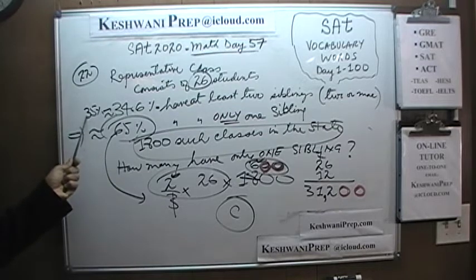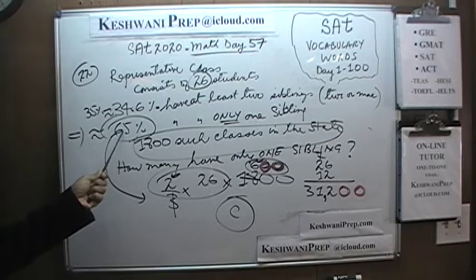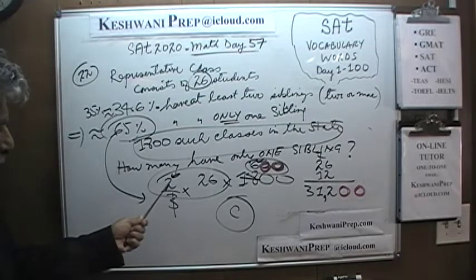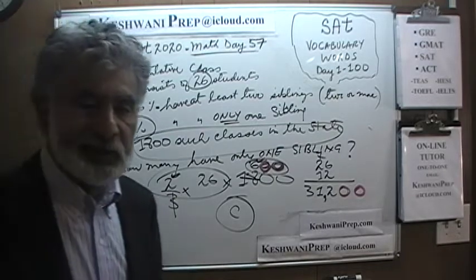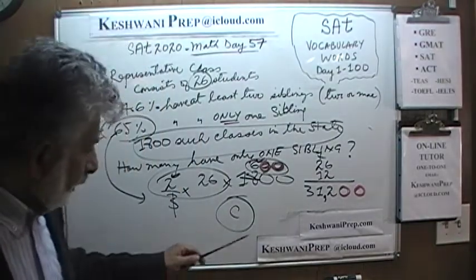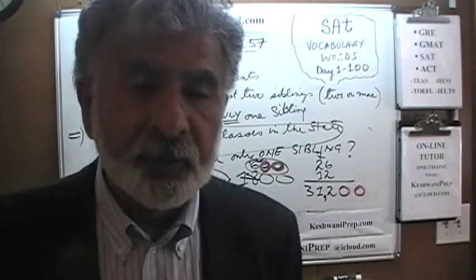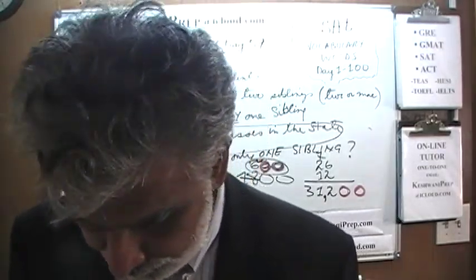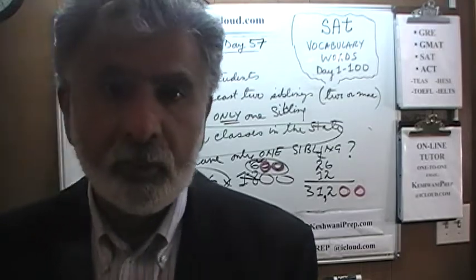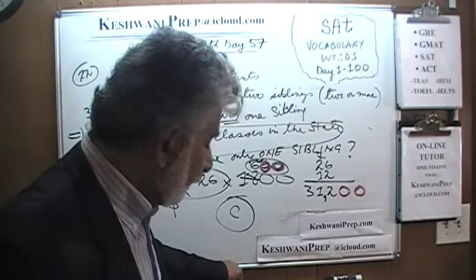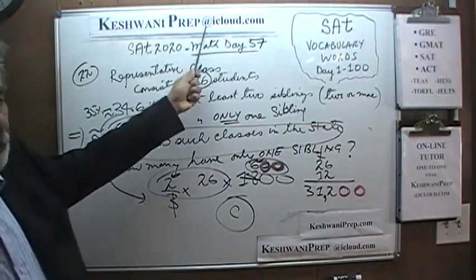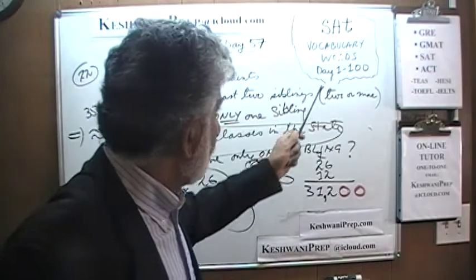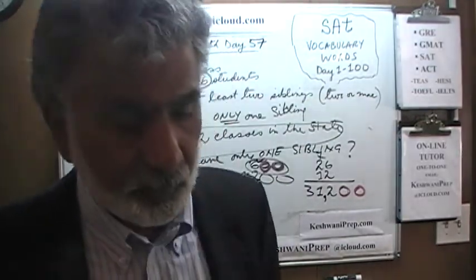The given percentage is 34.6%, which is not even 35%, so our approximation slightly overestimates — that is why our number of 31,200 is a bit higher than the correct 30,600. But there is enough wiggle room since the choices are far apart: it is clearly not 46,000 or 23,000. The answer is C, which is 30,600. We will stop here and pick up tomorrow from where we left off. If you would like to hire me as a tutor, email keshwaniprep@icloud.com. Bye now — watch the vocabulary videos too!